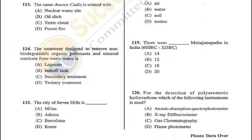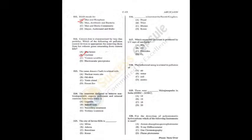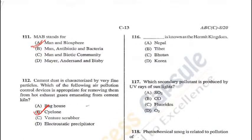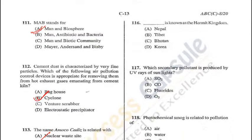Question 115: The city of Seven Hills is usually referred to as Rome — D is the correct answer. Question 116: Korea is known as the Hermit Kingdom — D is the answer. Question 117: The secondary pollutant produced by UV rays of sunlight is ozone — D is the answer.